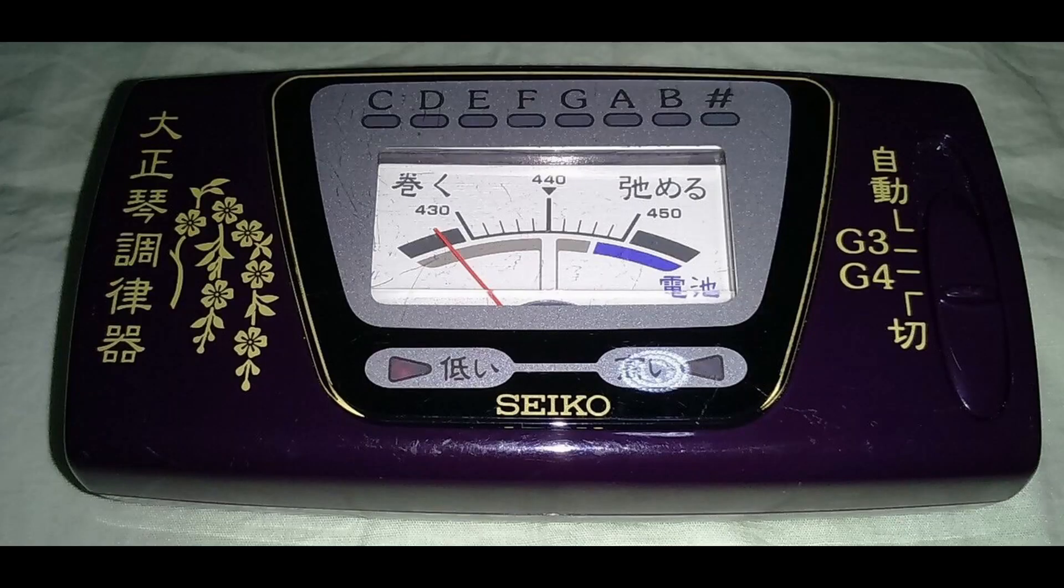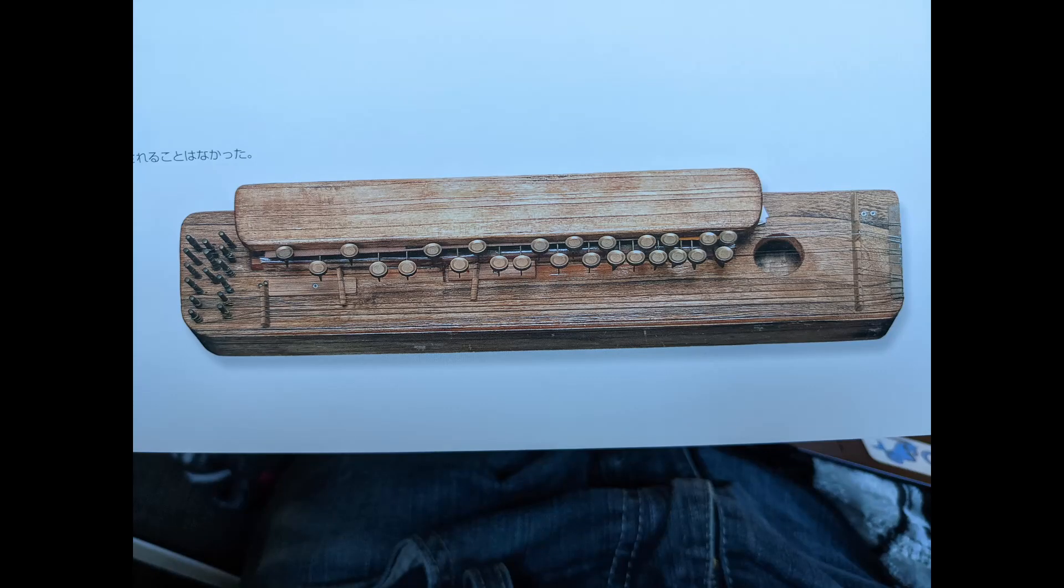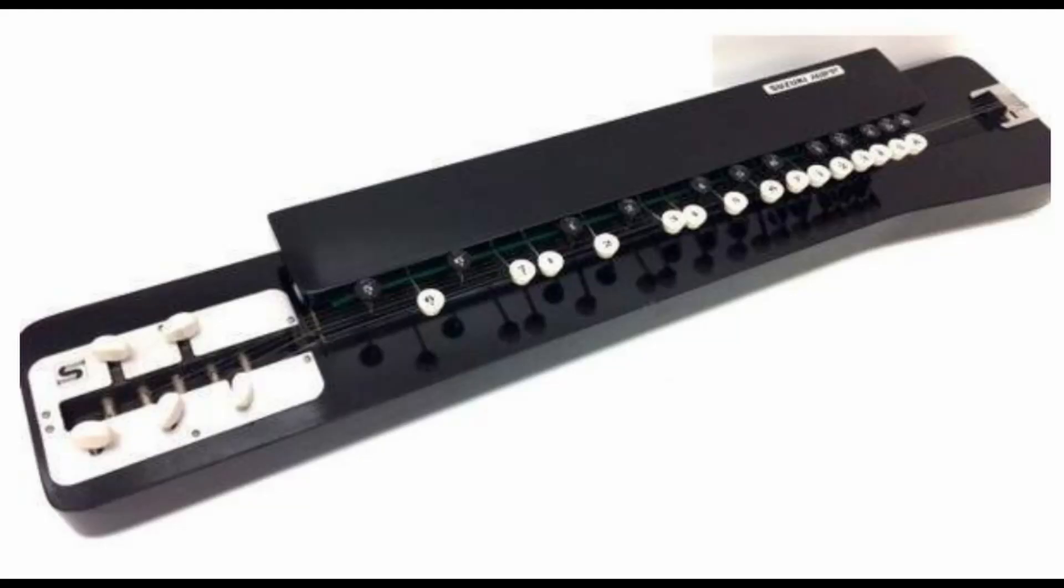Today we talk tuning a Taisho Koto. The first thing we need to do is agree upon the number of strings we're tuning. We've got 9 strings, 2 strings, 15 strings, and the standard 5 strings. Let's start with the standard 5 and then talk about it from there.